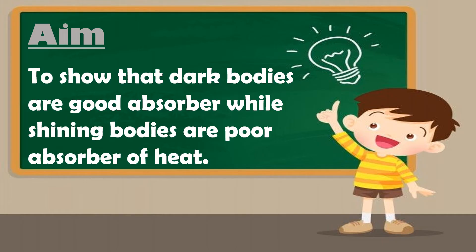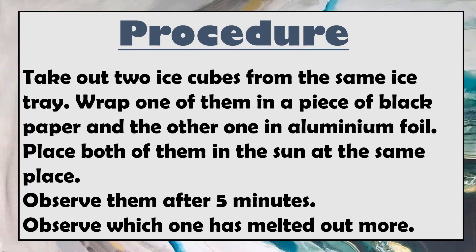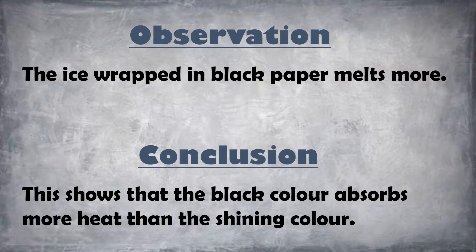Let us perform an activity to show that dark bodies are good absorbers while shining bodies are poor absorbers of heat. You will require a black paper, an ice tray with ice cubes, and aluminum foil. Take out two ice cubes from the same ice tray — wrap one in black paper and the other in aluminum foil. Place both in the sun at the same place and observe them after five minutes. You will observe that the ice wrapped in black paper melts more, because black color absorbs more heat than the shining color.